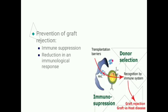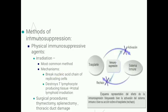Graft rejection is prevented by suppression of the immune response, referred to as reduction in immunological response. Various methods of immunosuppression exist. Physical immunosuppressive agents include irradiation, which is the most common method.